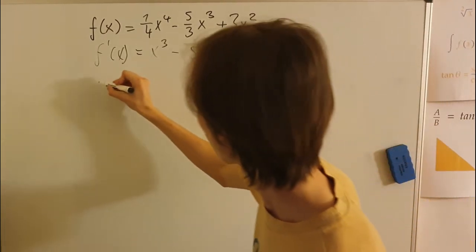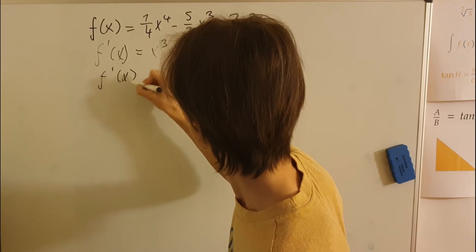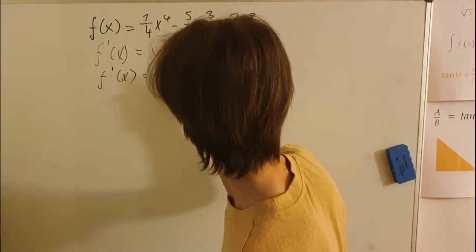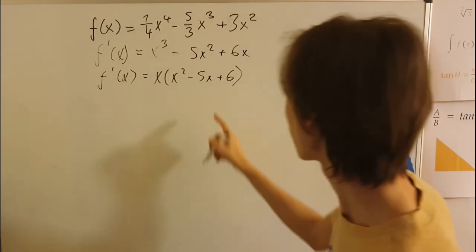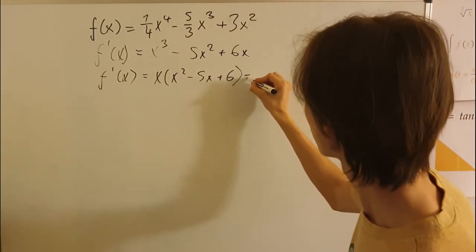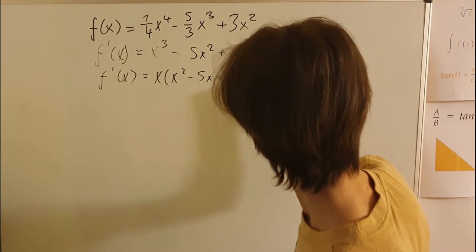And now we can rewrite the derivative to this: x times x squared minus 5x plus 6. And we can rewrite this even further too. Or let me just leave it like this.